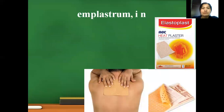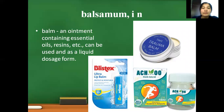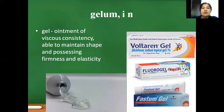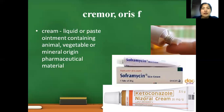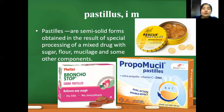Emplastrum — a solid preparation which can be spread when heated and which becomes adhesive at the temperature of the body. Balm — a type of ointment containing essential oils and resins, which can be used as semi-solid or liquid dosage forms. Gel — a type of ointment of viscous consistency, able to maintain shape and possessing firmness and elasticity. Cremor — cream — a liquid or paste ointment containing pharmaceutical materials of animal, vegetable, or mineral origin. Pastils are semi-solid forms obtained as a result of special processing of a mixed drug with sugar, flour, mucilage, and some other components.